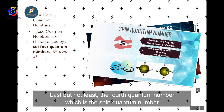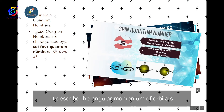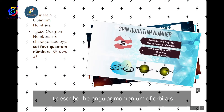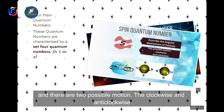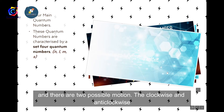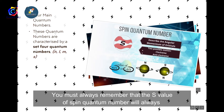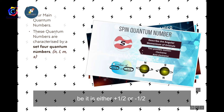The fourth quantum number is the spin quantum number (s). It describes the angular momentum of orbitals, and there are two possible motions: clockwise and anti-clockwise. The s value will always be either positive one-half (+1/2) or negative one-half (-1/2).